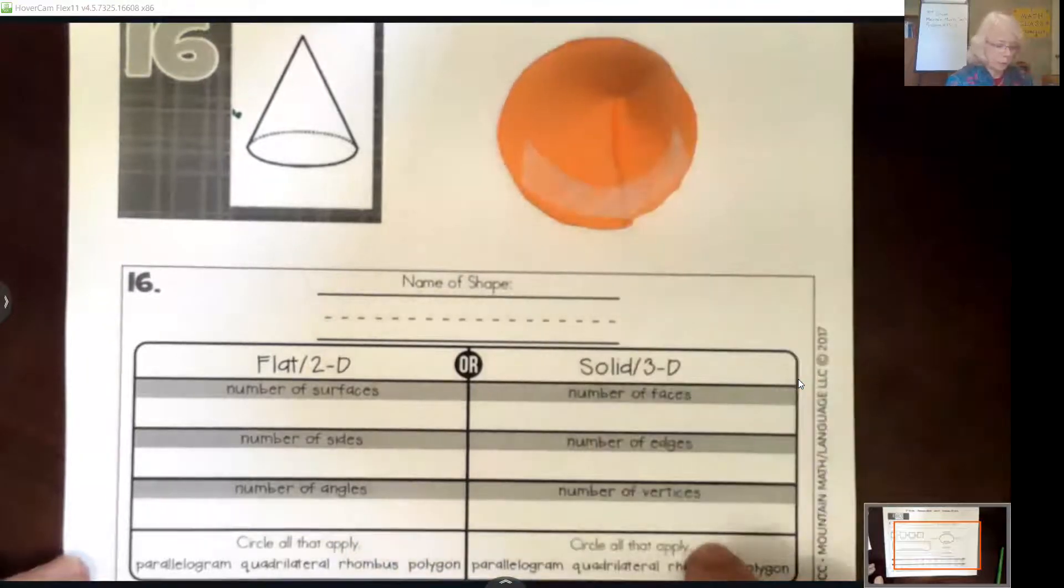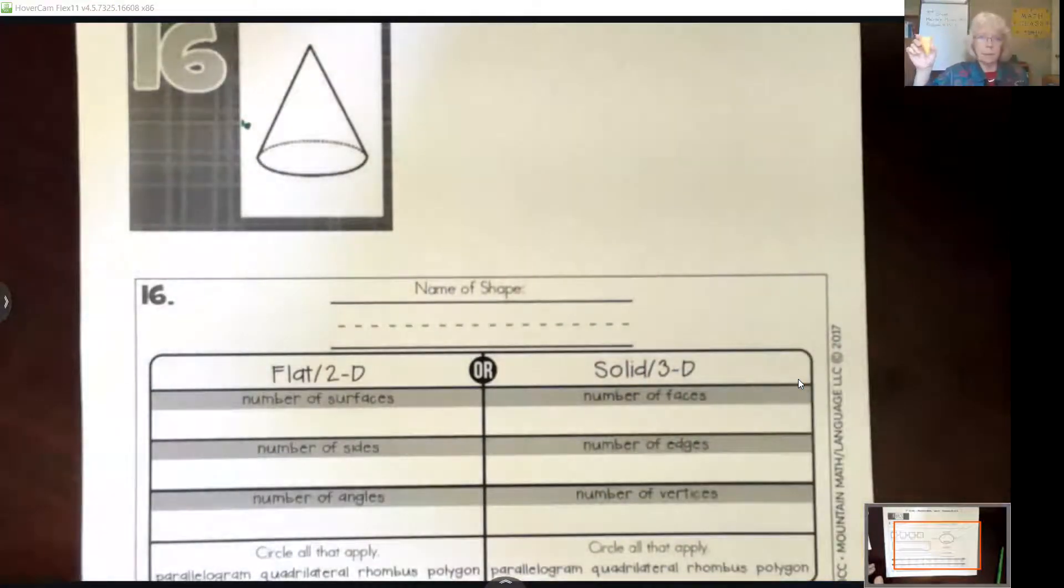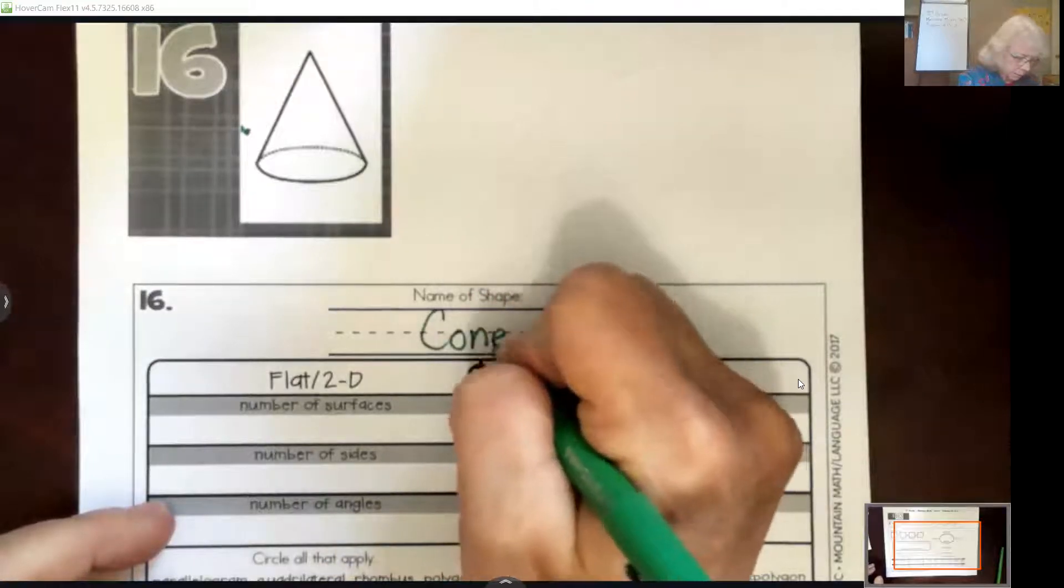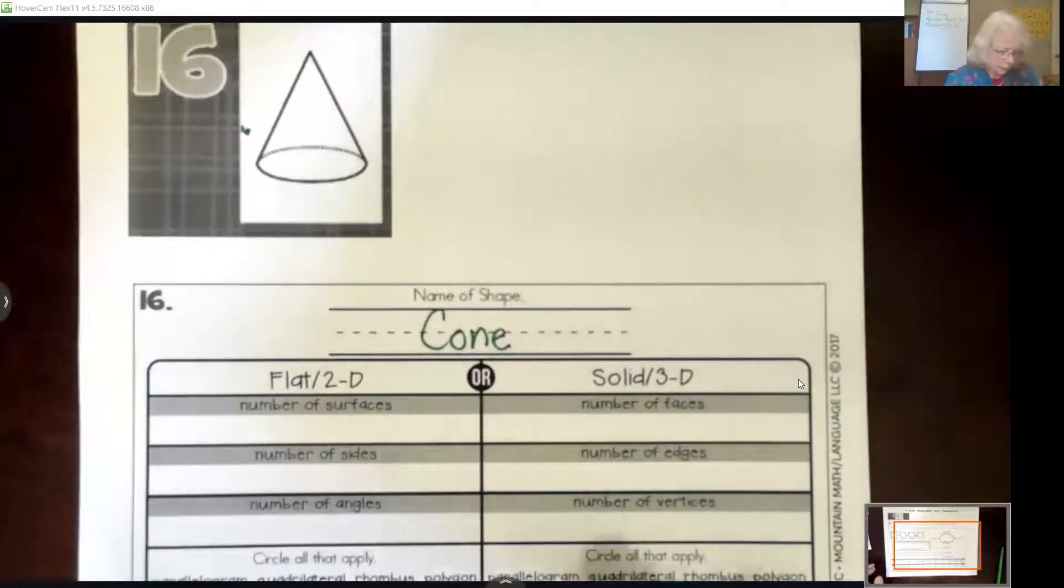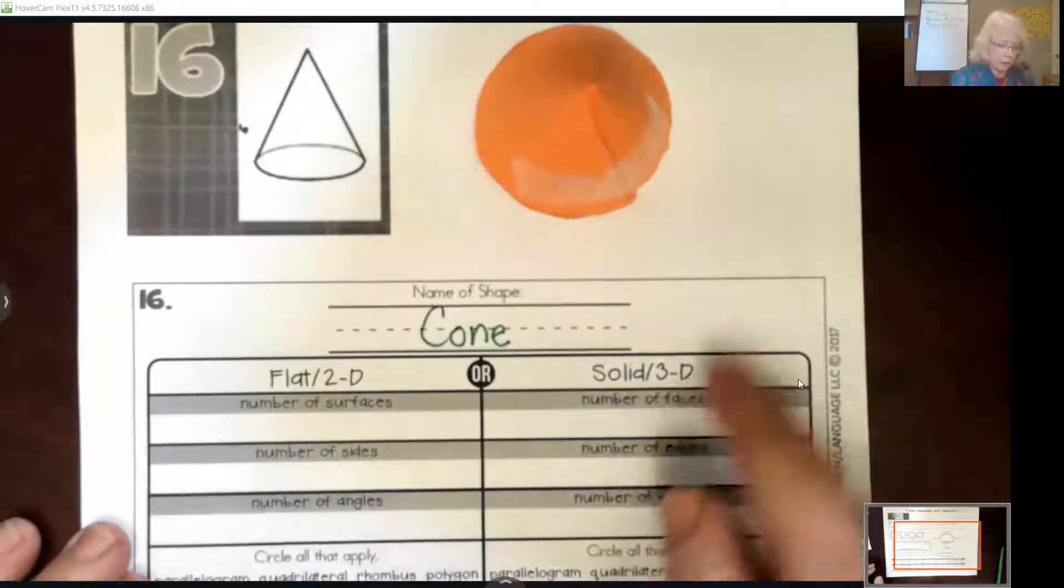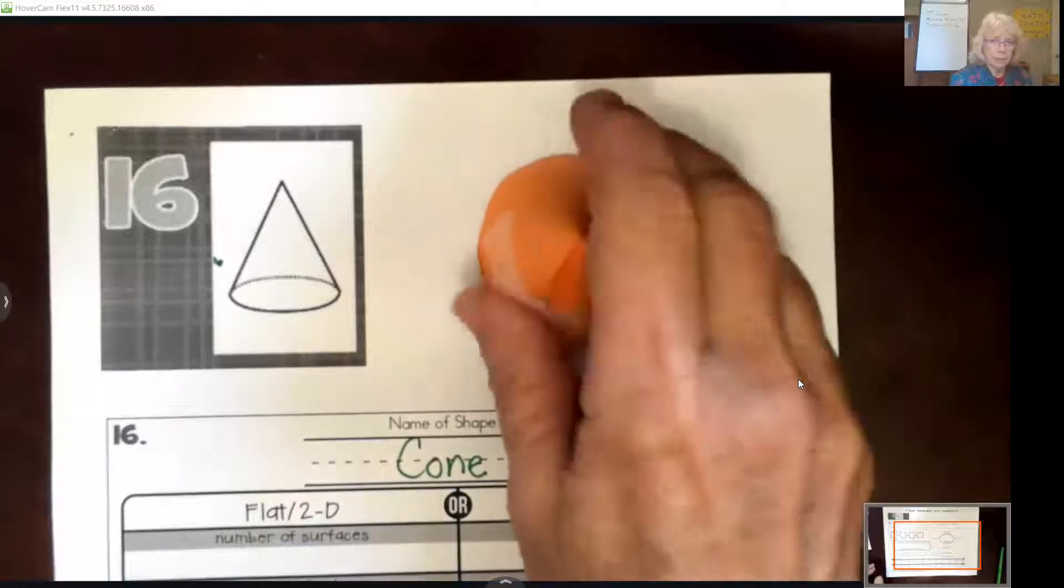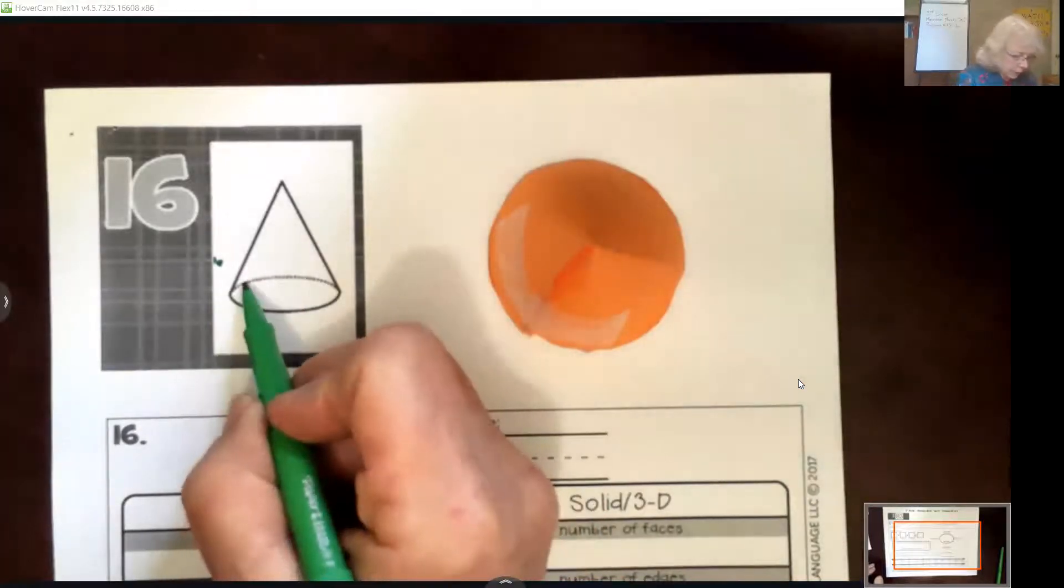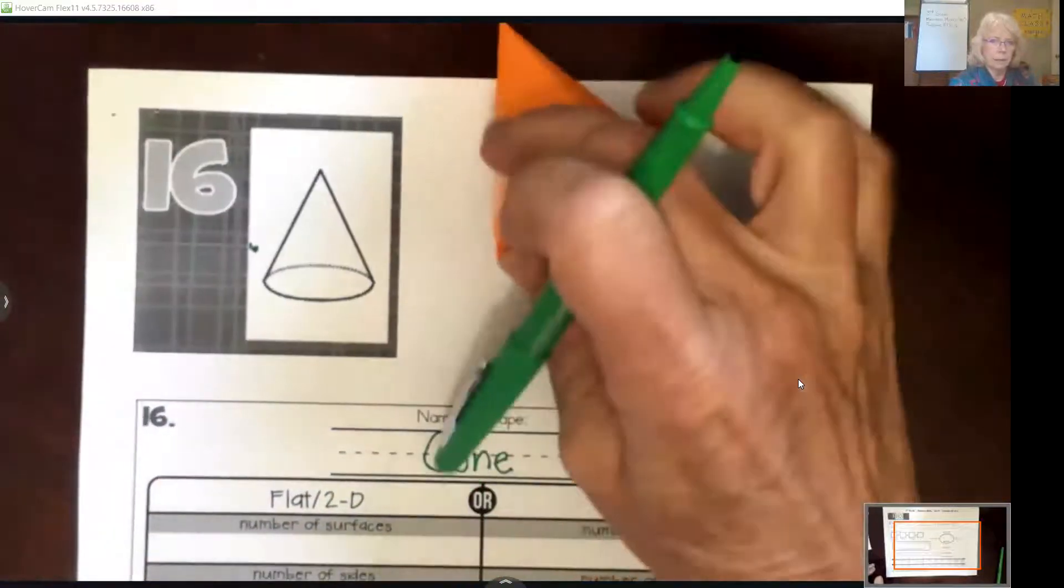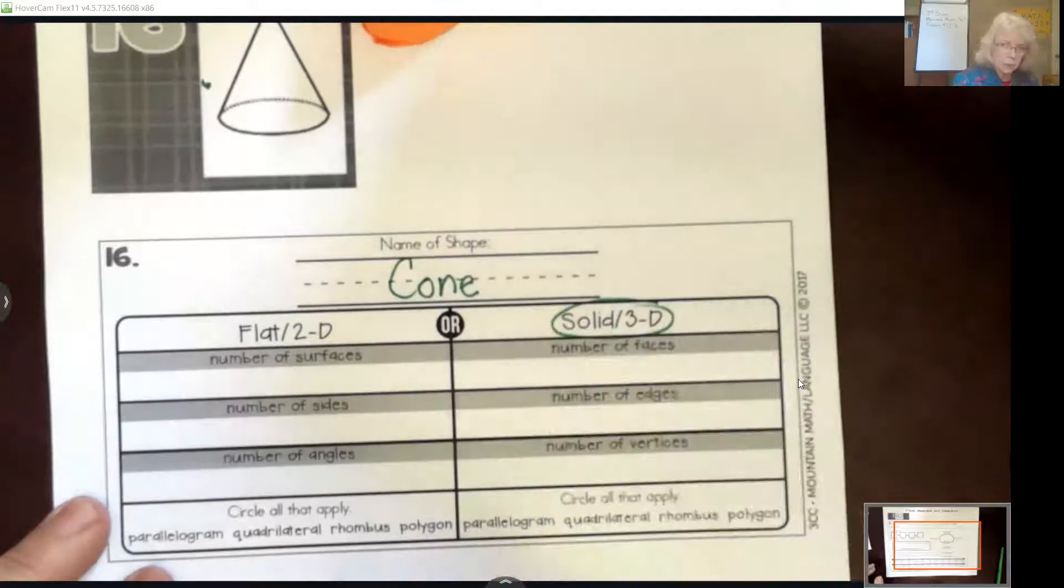So I help my kids remember this by thinking about if you turned it this way and held it up, you could put ice cream on top and you have a cone, which is our shape. We're going to write cone here. And now we have to decide is our cone two dimensional meaning flat or is it three dimensional? That is why I made a real one for you because you can see it is not flat. It is three dimensional. So we're going to go over here and circle solid in 3D.